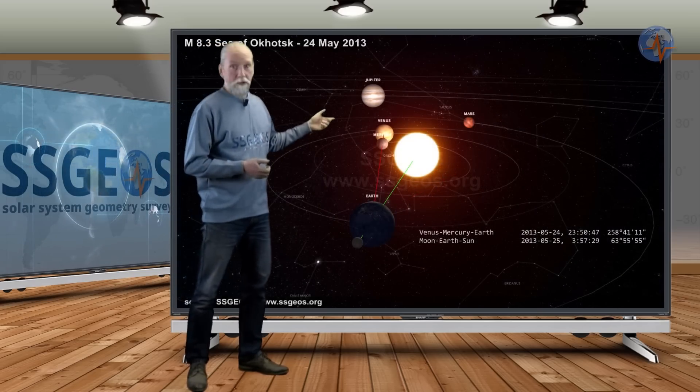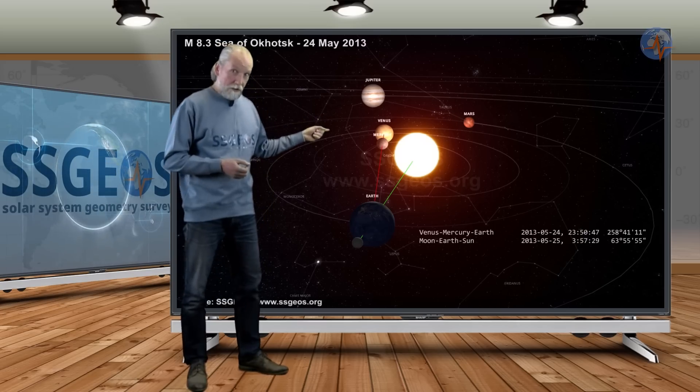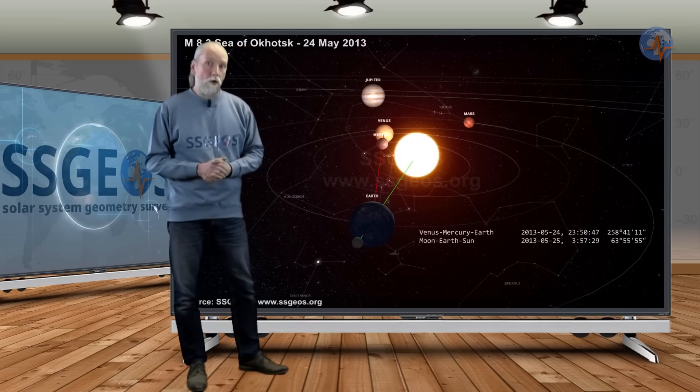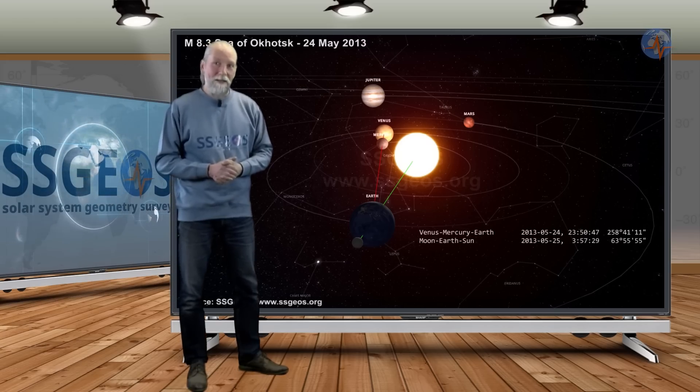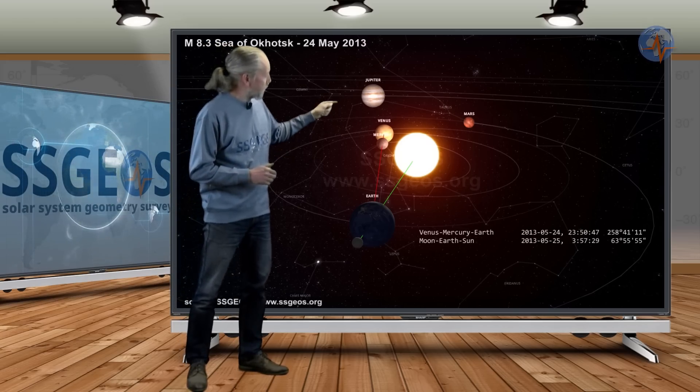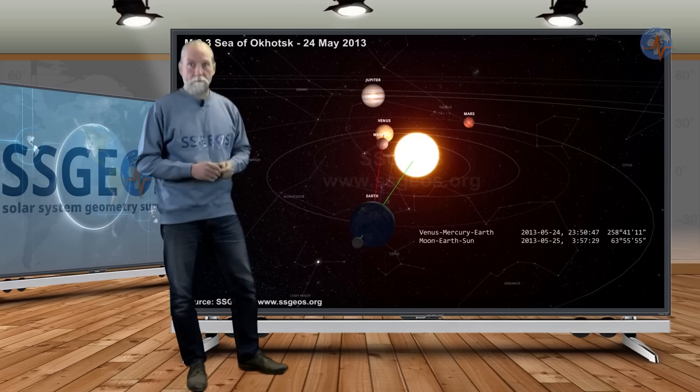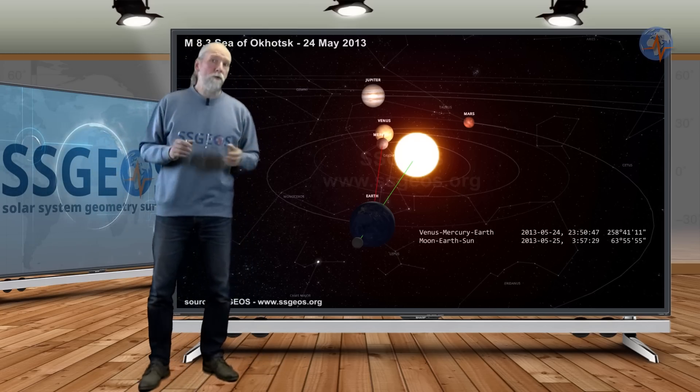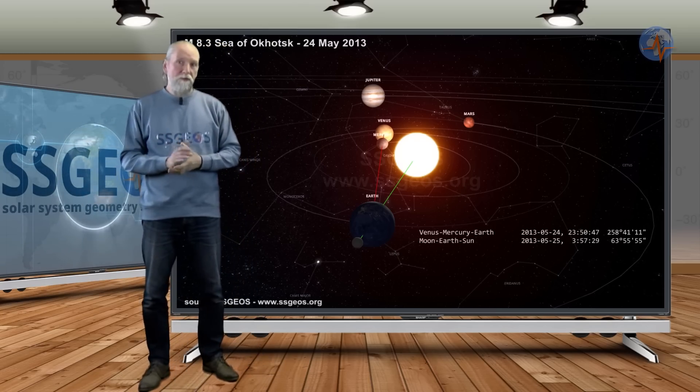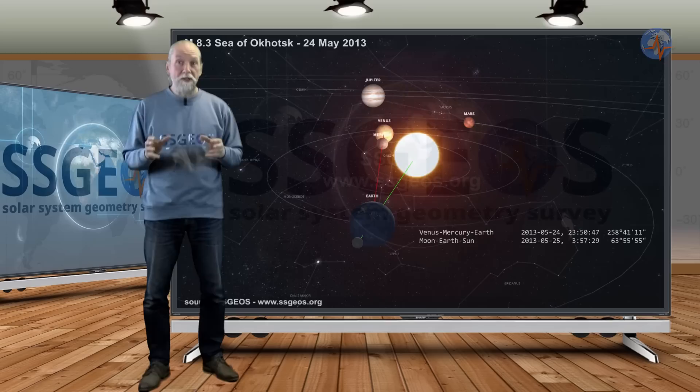We can take another example from 2013, a magnitude 8.3 at the Sea of Okhotsk. Also at the time of full moon, and again we see that Earth was in a close conjunction with Mercury and Venus. So not every full moon is the same. There are major differences between the full moons because of the positions of the planets.